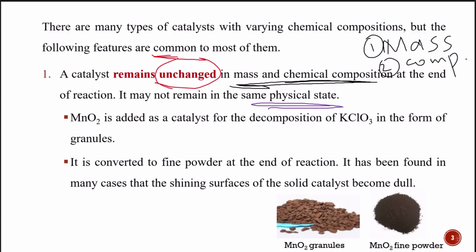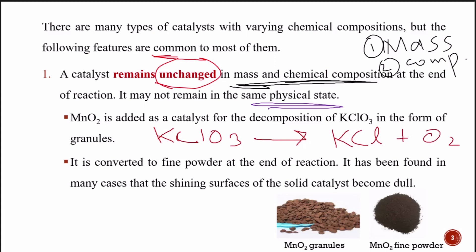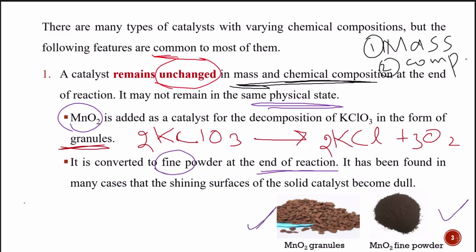For example, MnO2 is added as a catalyst for the decomposition of KClO3. In many cases, the shiny surface of a solid catalyst may become dull, or granules may be converted into fine powder. But at the end of the reaction, its mass and chemical composition remain the same.